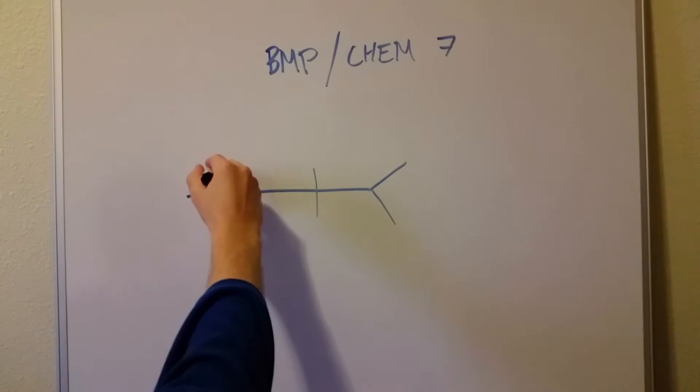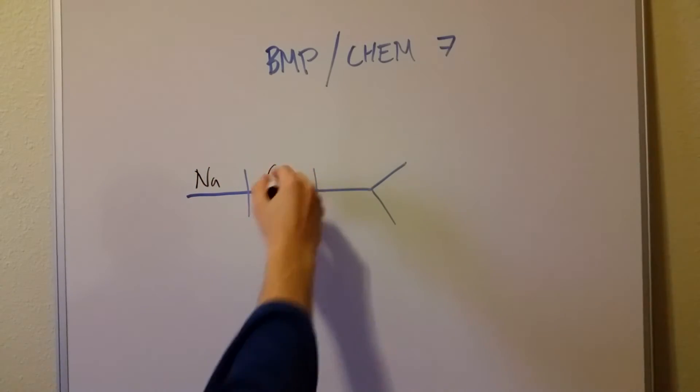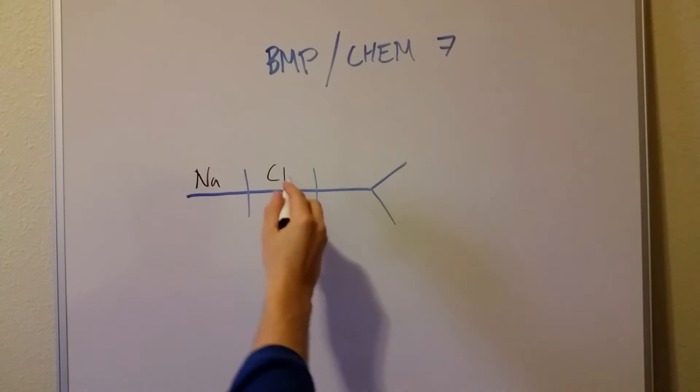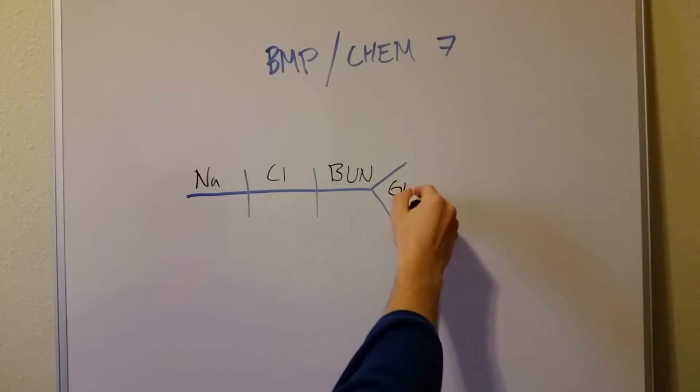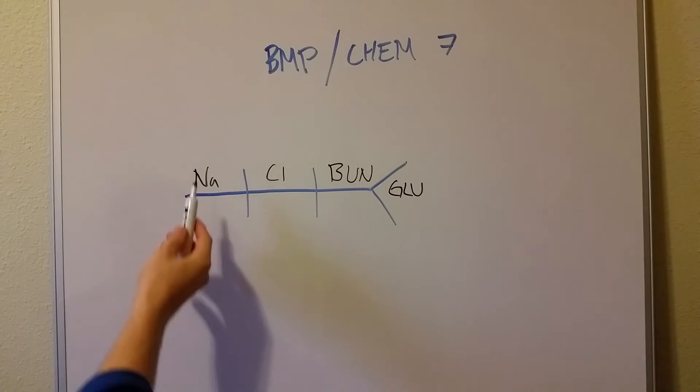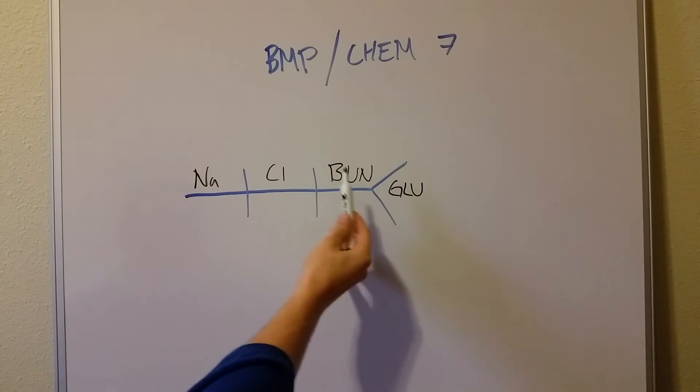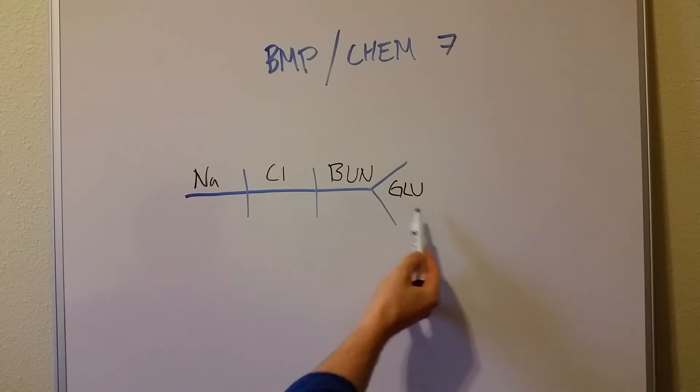So Na Cl, right? Sodium chloride because it's salty bun with sugar. Glucose. So we have sodium chloride, blood urea nitrogen, and glucose. Salty bun with sugar.